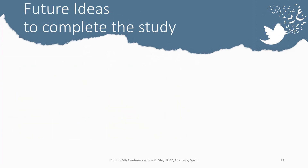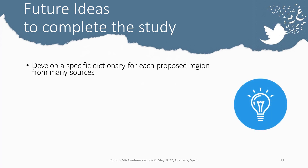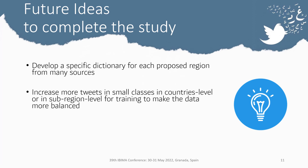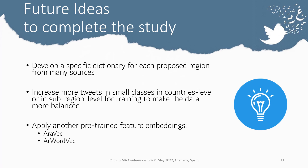To complete our study, we are currently developing specific dictionaries for each proposed region from many sources. We are also trying to increase the number of tweets in smaller classes at the country or sub-region level for training, to make the data more balanced. Additionally, we want to apply other pre-trained feature embeddings like Arabic and R-Word2Vec.